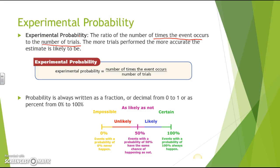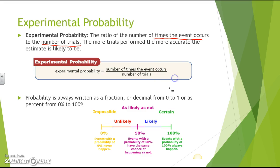The more trials performed, the more accurate the estimate is likely to be. For example, you could be flipping a coin. If your number of trials is 10 flips, and heads occurs 7 times, then the experimental probability is 7 heads out of 10 total trials. That's how experimental probability works.